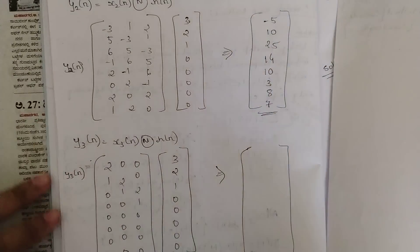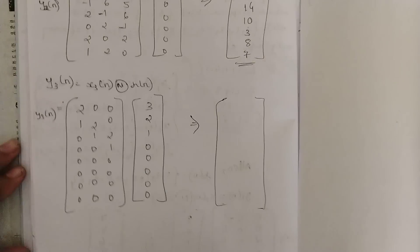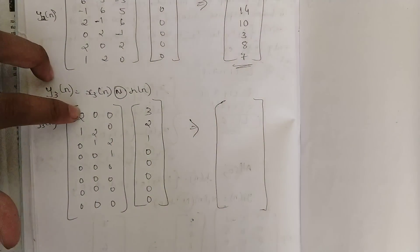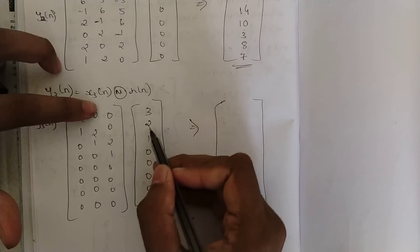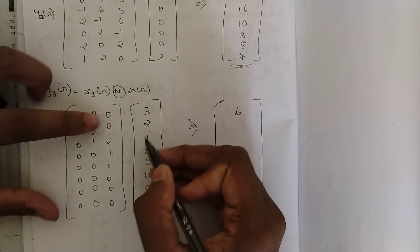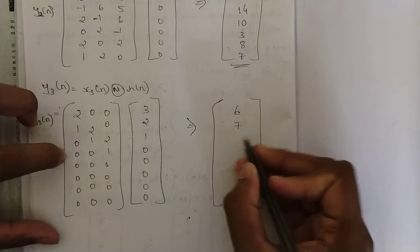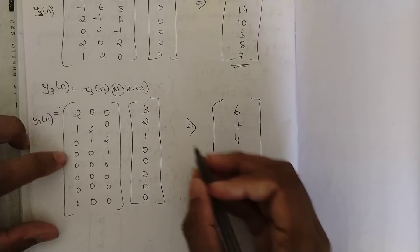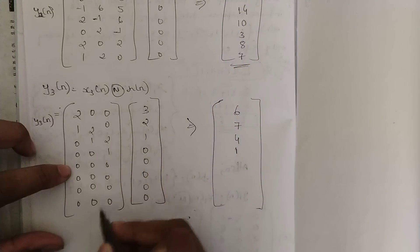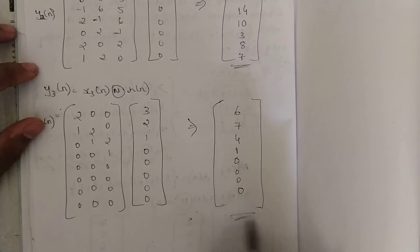For y3(n), perform the circular convolution of x3(n) = {2, 1, 0, 0, 0, 0, 0, 0} with h(n). The results are: 6; 3 + 4 = 7; 0 + 2 = 2; 2 + 2 = 4; then 0 + 1 = 1; then remaining values are 0, 0, 0. So y3(n) = {6, 7, 2, 4, 1, 0, 0, 0}. These are the values of y1(n), y2(n), and y3(n).